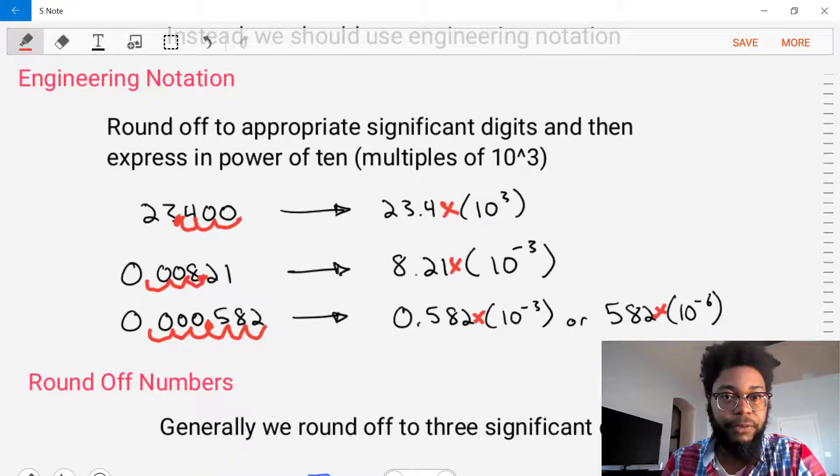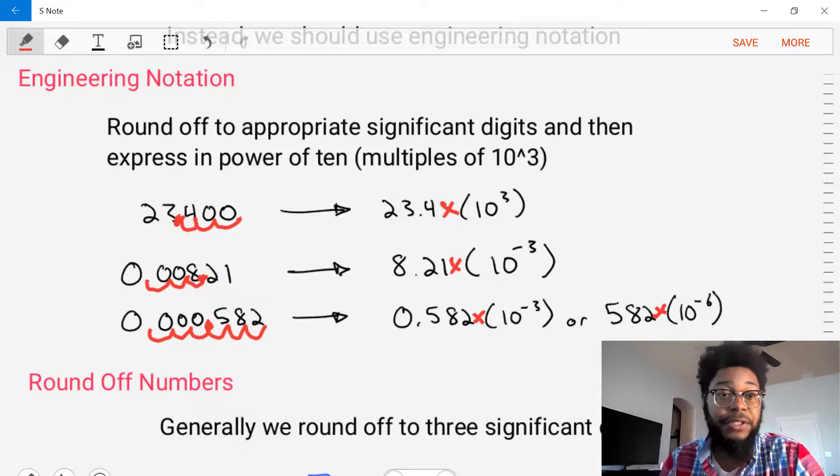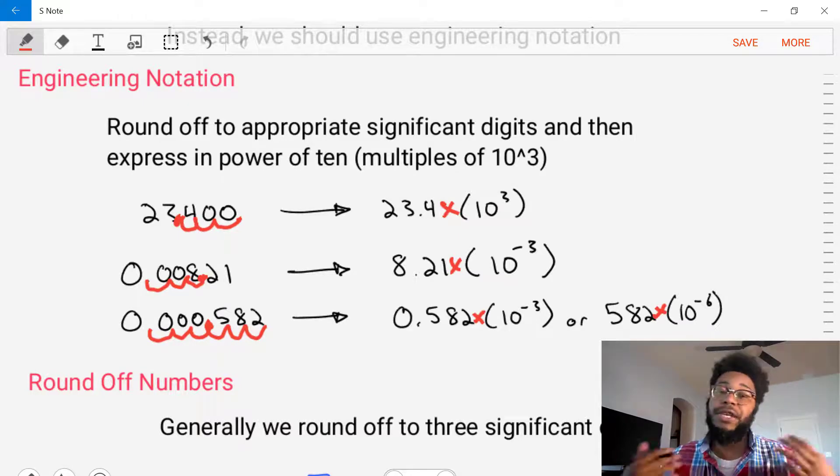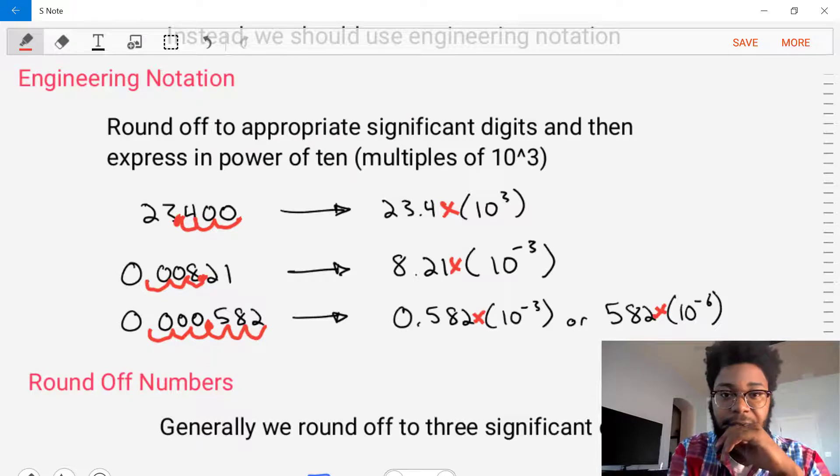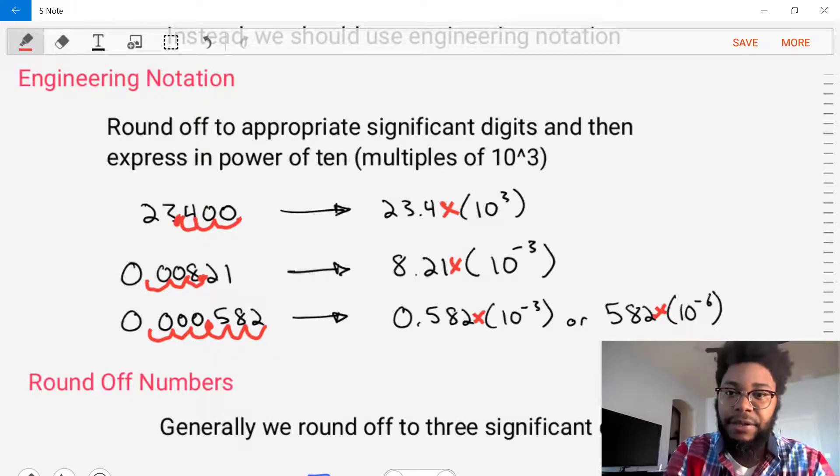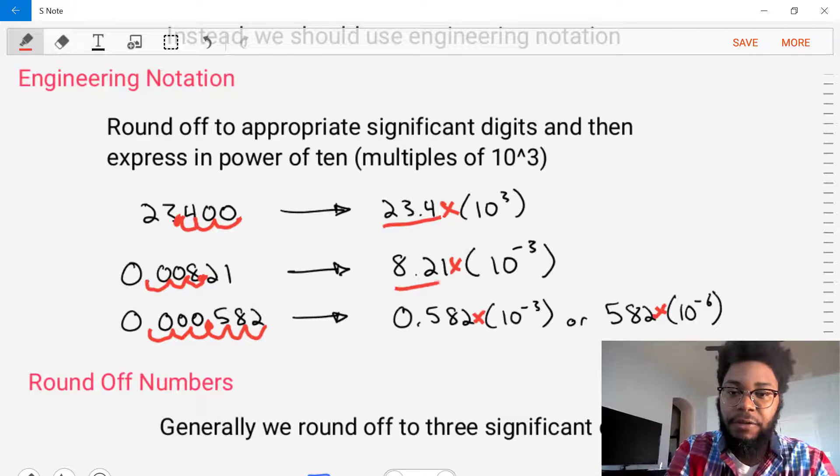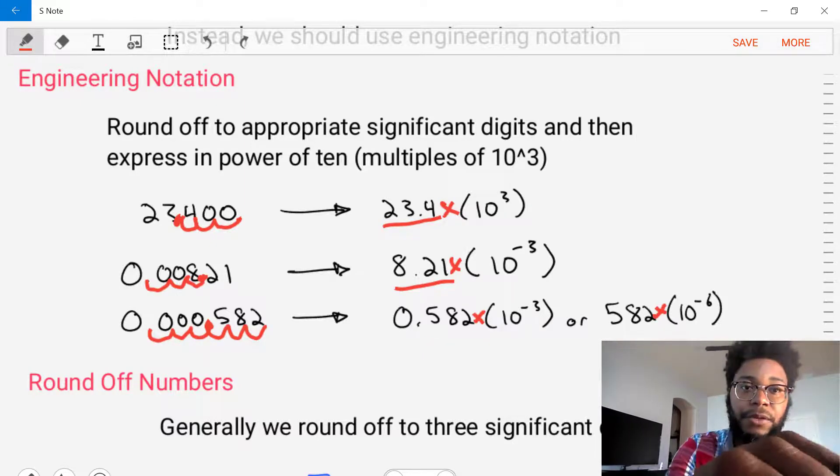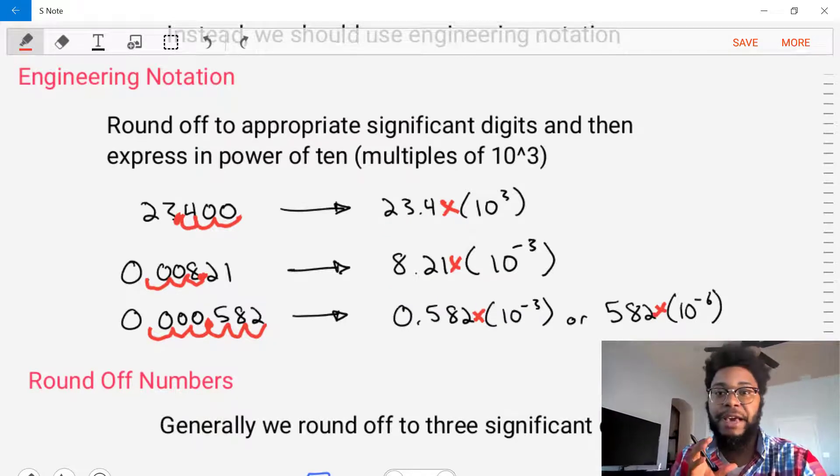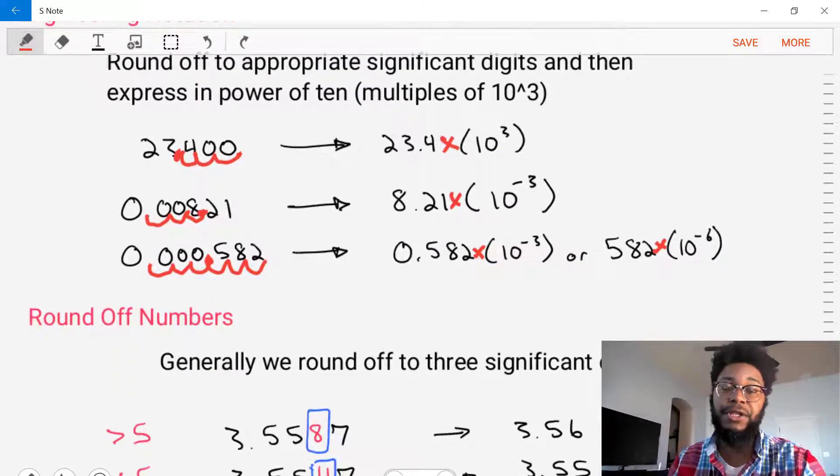So we can do this same exercise with any number. Any number that we get when we're solving a problem, we can convert it into engineering notation. And note that in all of these cases, we are leaving ourselves with three to four significant digits. And that's actually what we want. That's actually what we require for engineering notation is that we have three to four significant digits in our final answer and that we're taking it as a multiple of 10.